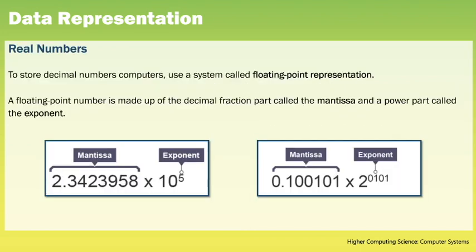Moving on to real numbers — these are numbers that include fractions or values after the decimal point, for example 2.342. This type of number is also known as a floating point number, or in maths and science you may have heard it referred to as scientific notation. All floating point numbers are stored using a mantissa and exponent. The size of the mantissa increases the precision or accuracy of the number, and the size of the exponent increases the range of the number.